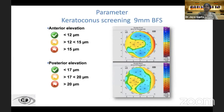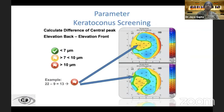The elevation maps have certain numerical thresholds. On the anterior elevation, anything beyond 15 microns, and on the posterior elevation, anything beyond 20 microns in the 6 mm zone is a red flag. We also look at the difference between the central peak elevation back and elevation front, which should not be more than 10 microns — anything beyond 10 is a red flag.